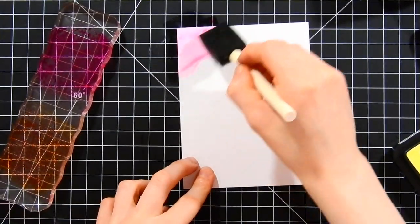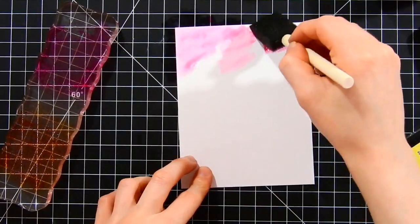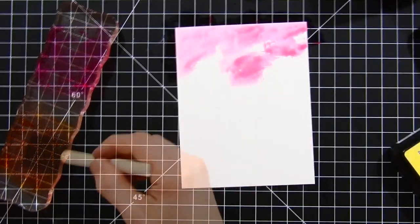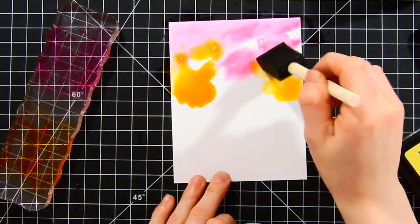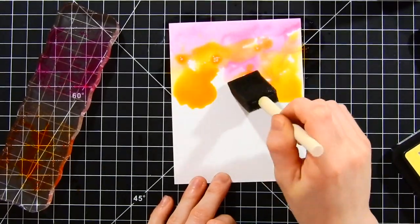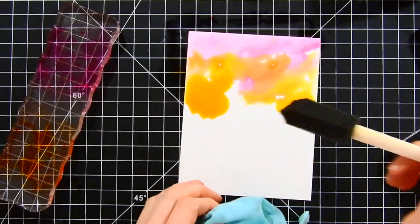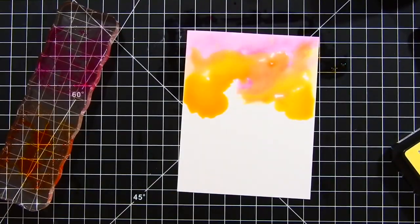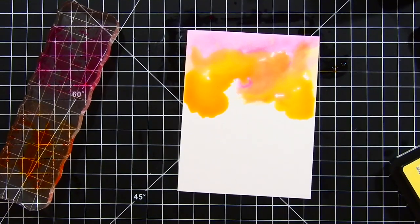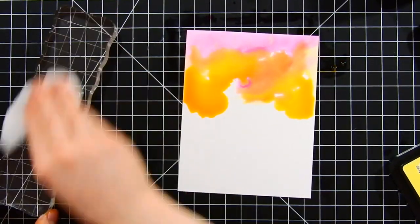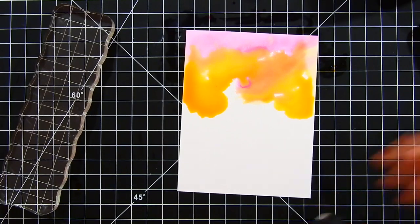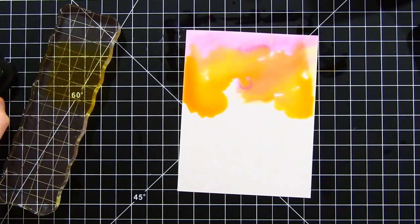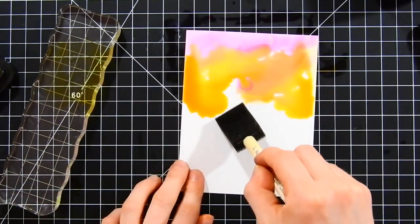This watercolor paper is Strathmore Bristol smooth paper. This is a watercolor paper I've used for a long time and I love it for so many different techniques and watercoloring. It's pretty much the paper that I use almost exclusively, although I do use Canson XL watercolor paper at times. You can use any watercolor paper for your coloring, just bear in mind that some watercolor papers do give different results than others.